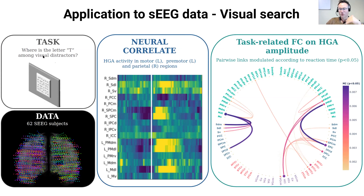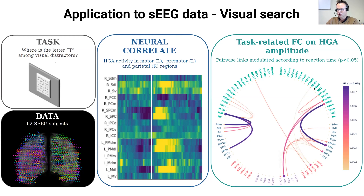Here you have an example we are working on. We are developing a Jupyter notebook to access the data directly on eBrains, and to perform task-related analysis — for example, showing brain regions with increased high-gamma activity, which is one of the neural correlates we look at, and also to plot task-related functional connectivity. I will stop here, and if you have questions, please go ahead.